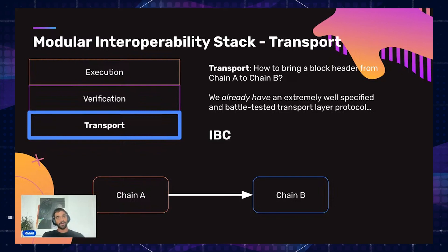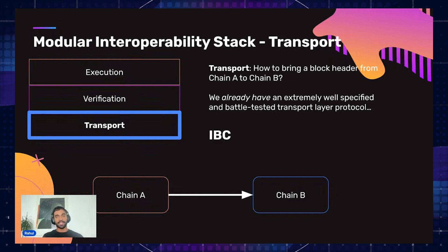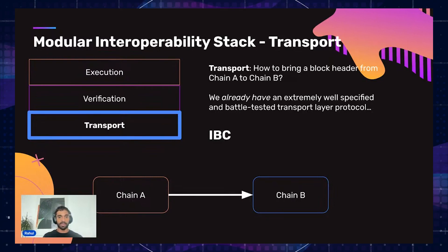We already have an extremely well-specified and battle-tested transport layer protocol — it's called IBC. Those of you who know IBC know it's basically a Cosmos-based system for transporting messages and doing this whole process of transport between different blockchains. It's extremely well-specified, has multiple clients running it, is well-documented, and is battle-tested because it's been used across many different blockchains for a very long time. That's exactly what you need with these types of infrastructure projects.